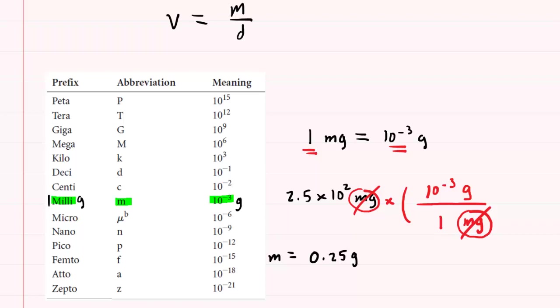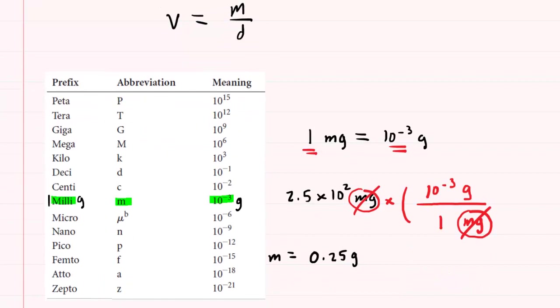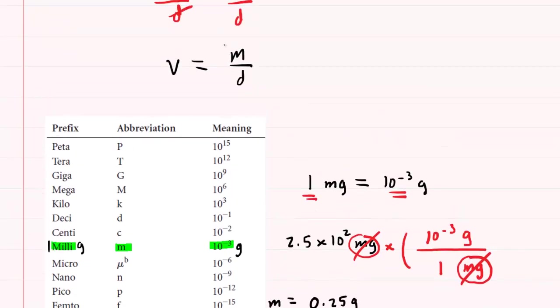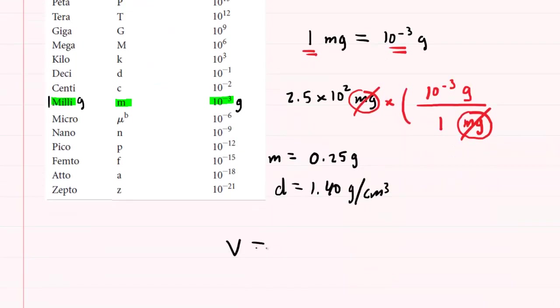So now that we have the mass in the correct unit, and we have the density given as 1.40 grams per centimeter cubed, we can go ahead and easily calculate the volume from the equation we established earlier. Volume is equal to mass divided by density. So here we go. Volume equals mass divided by density. Let's pick up our calculators and compute this.